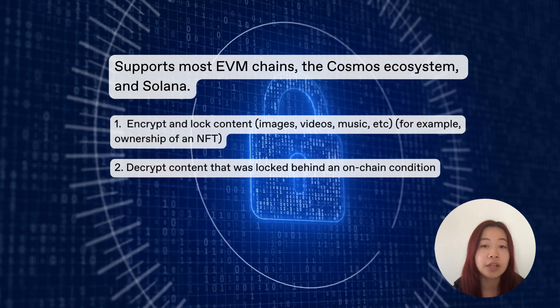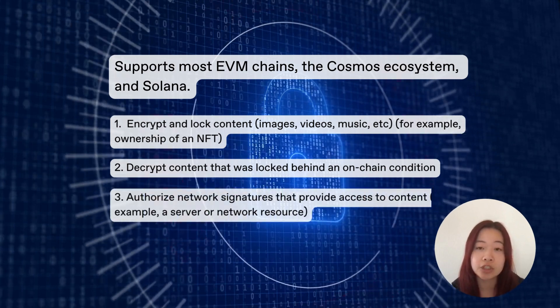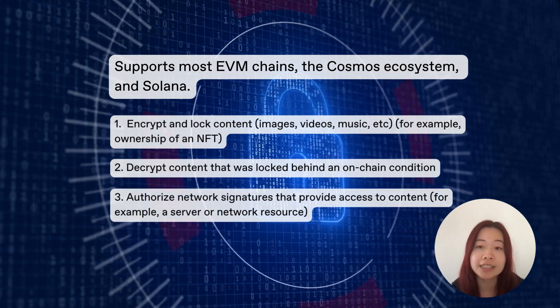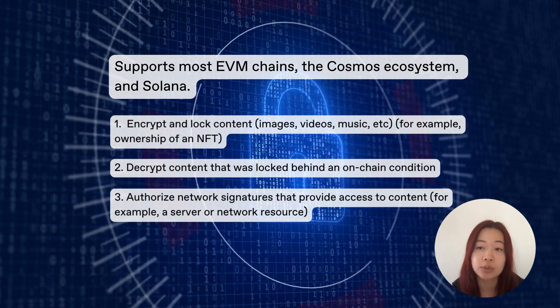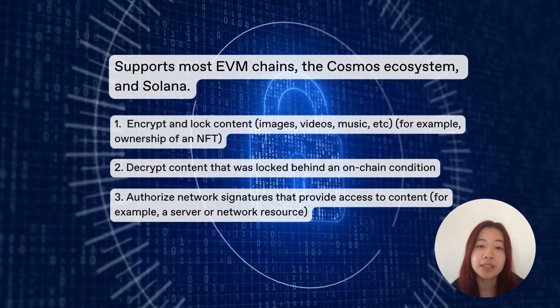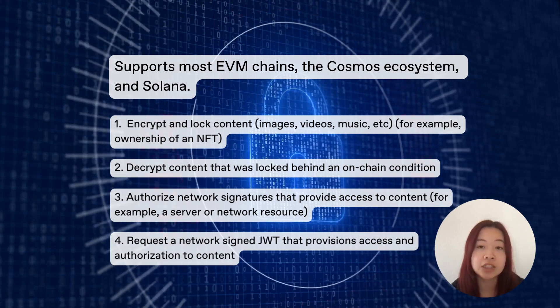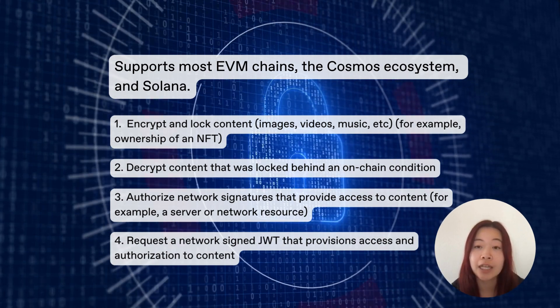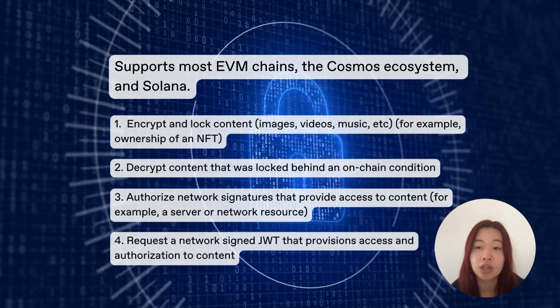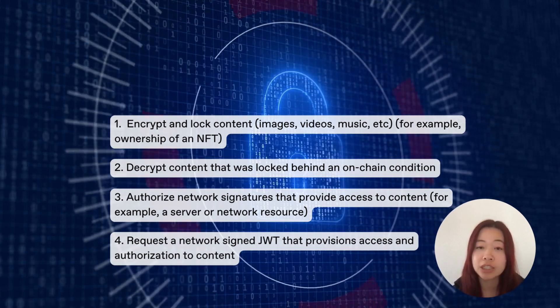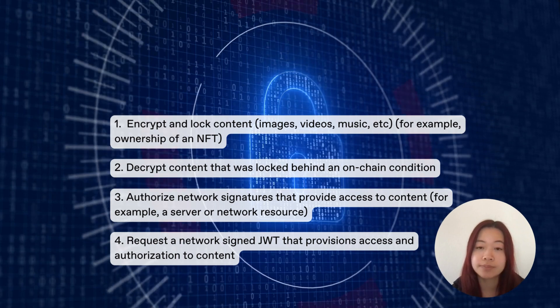Three: authorize network signatures that provide access to content or resources. Four: request a network-signed JSON web token for access and authorization to content behind on-chain conditions.